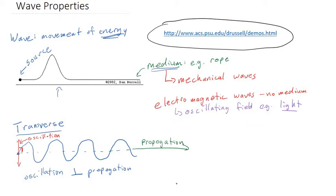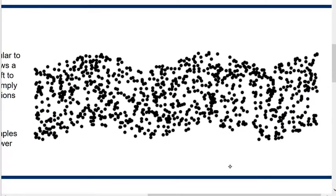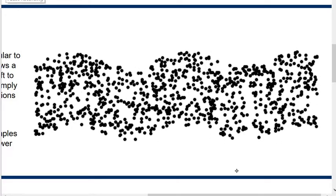I'm going to zoom in on another one of Dan Russell's diagrams. If you'd imagine zooming in on that rope, this is what you'd see. The rope particles are moving up and down, while the wave seems like it's traveling to the right. So the direction of oscillation is up and down, and the direction of propagation is to the right.